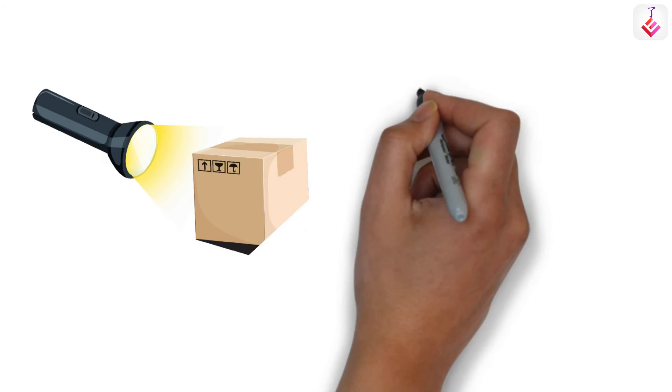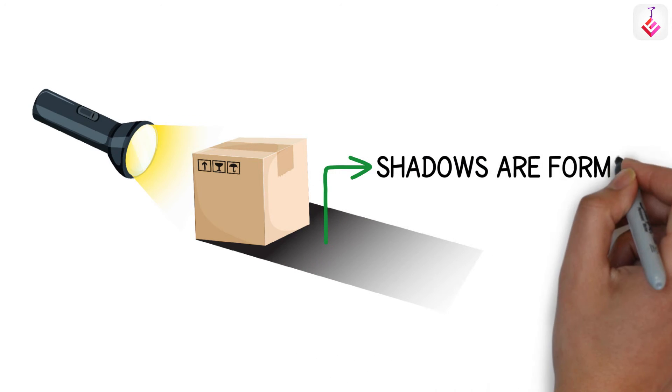When light is blocked by an object, shadows are formed. The shape of the shadow is similar to the shape of the object.